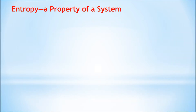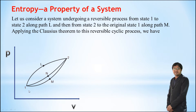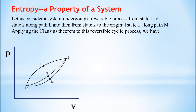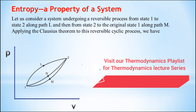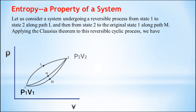Let us consider a system undergoing a reversible process from state 1 to state 2 along a path L, and then from state 2 to the original state 1 along path M. We know that to describe a state in thermodynamics we require a minimum of 2 properties, and property means it is the characteristic of the substance. So here we describe state 1 by two properties P1 and V1, and state 2 by P2 and V2.